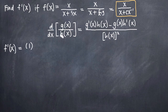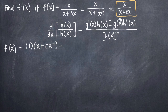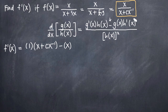Now we need to multiply that by h(x), which is our denominator — we just multiply by the original denominator, x plus cx to the negative 1. According to our formula, we subtract and then plug in g(x), our original numerator, which is x. Then we multiply by the derivative of the denominator, h prime of x. So we need to take the derivative of x plus cx to the negative 1.